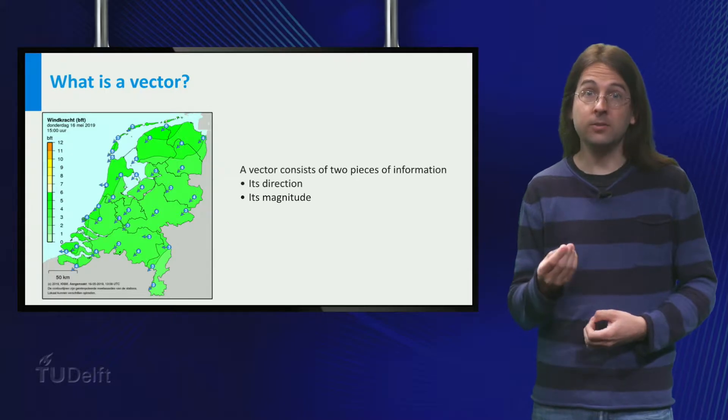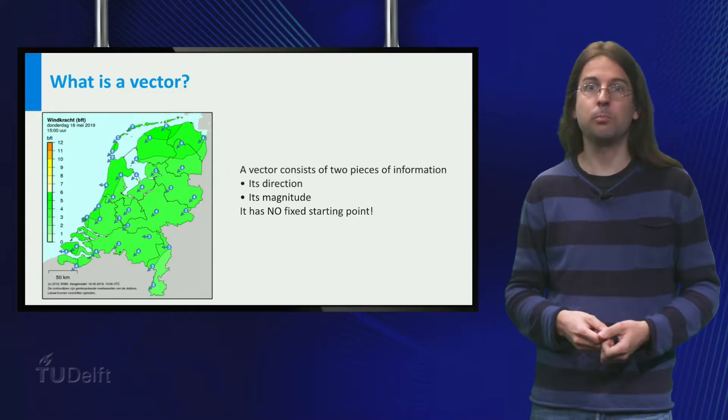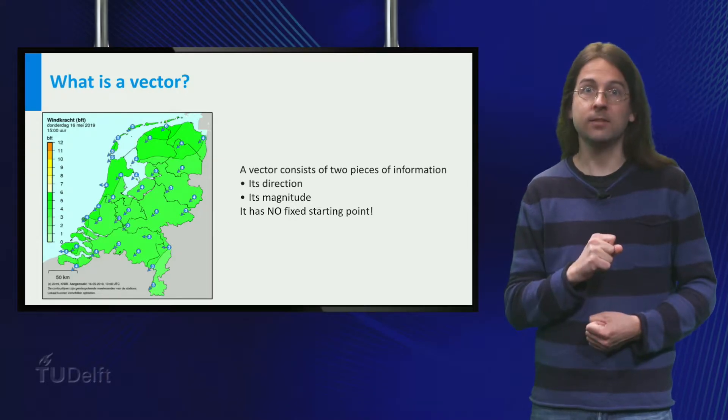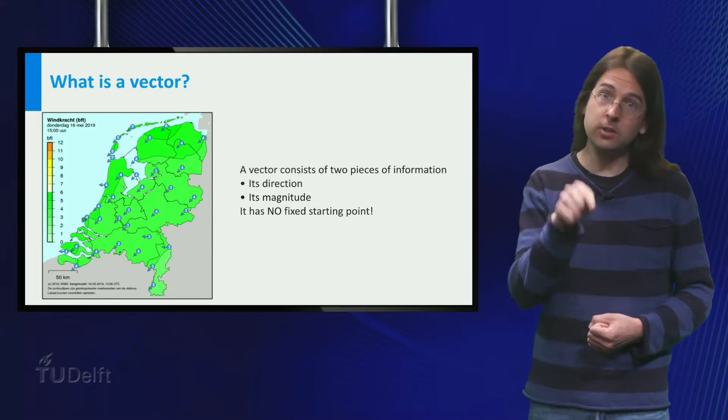Moreover a vector does not have a fixed starting point. A northeast 4 here indicates the same vector as northeast 4 at your location would.